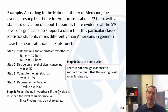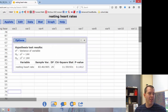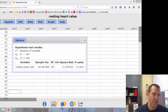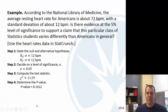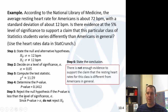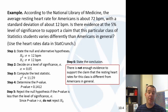There's not enough evidence to support the claim that the resting heart rate for this class is different from Americans in general. So we had a p-value of 0.1412 — small but not less than our alpha — so not enough evidence to support the claim that the resting heart rate is different from Americans in general. That's it, just one quick example from section 10.4.